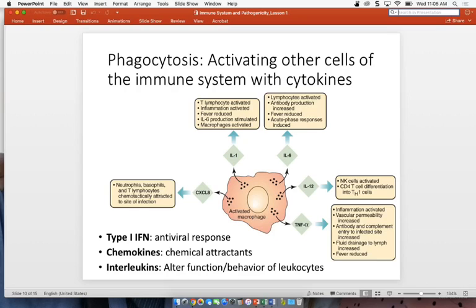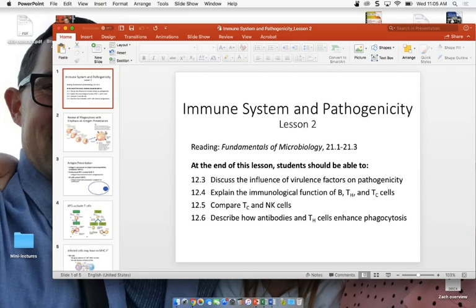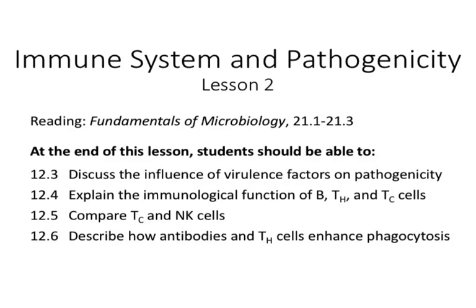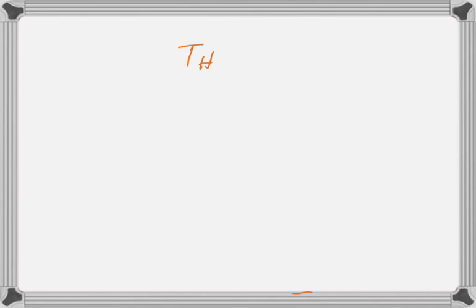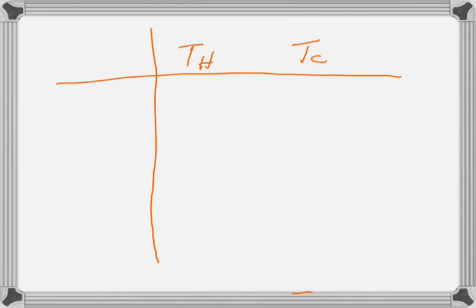I'm going to put together a table to get us started. I'd like you to work in groups of two or three and list the characteristics — we'll take about three minutes. Just to give you an idea of what we're covering today: the main goal is T cells — T helper and T cytotoxic. The last thing we'll refer to if we have time is NK cells, and we'll talk about antibodies and B cells on Friday. We're going to look at T helper and T cytotoxic cells.